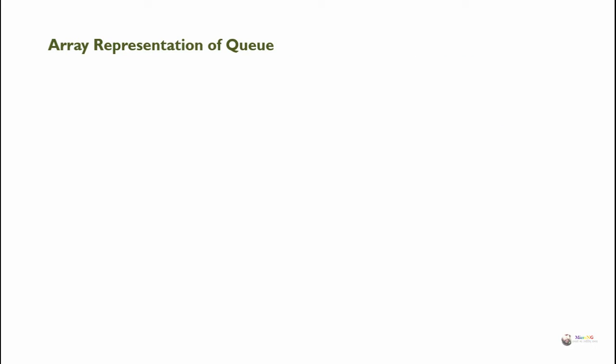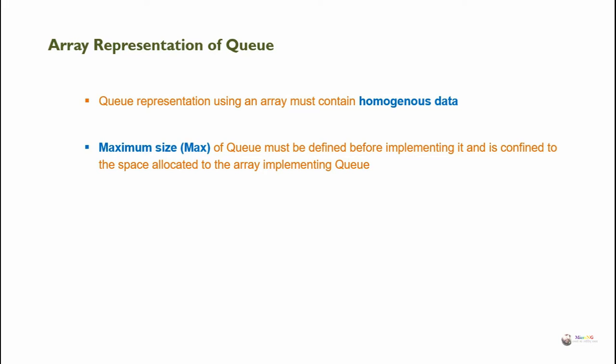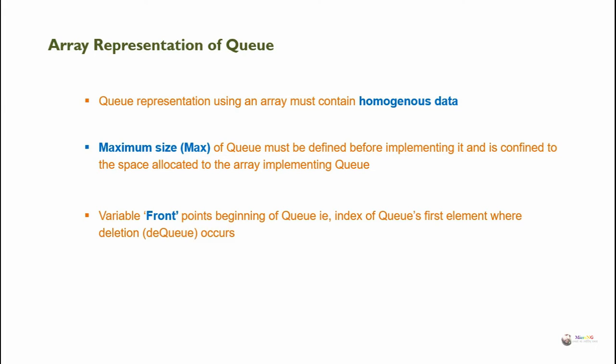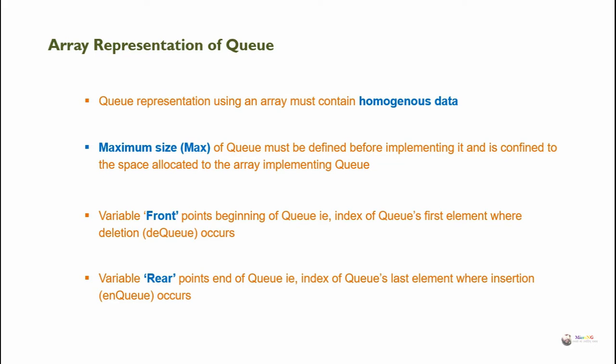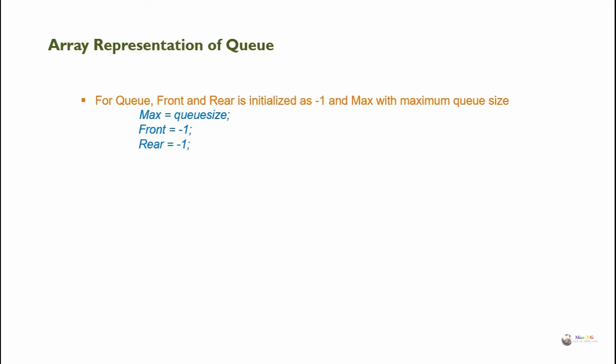Array representation of Queue: a Queue represented using an array must contain homogeneous data. The maximum size of the Queue must be defined before implementing it and is confined to the space allocated to the array. Variable 'front' points to the beginning of the Queue — that is, the index of the Queue's first element where deletion or dequeue occurs. Variable 'rear' points to the end of the Queue — that is, the index of the Queue's last element where insertion or enqueue occurs. For the Queue, front and rear are initialized as minus 1, and max is set to the maximum queue size.